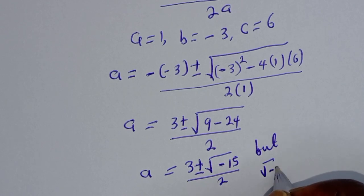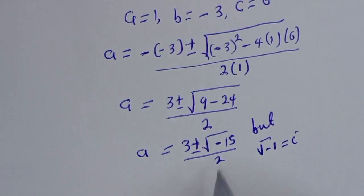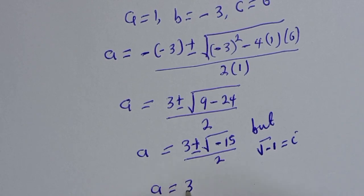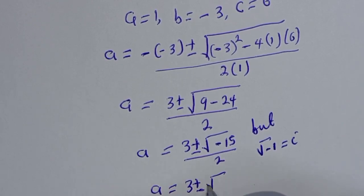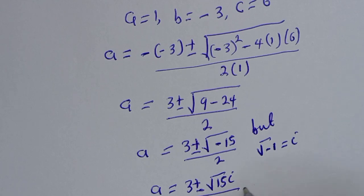Since square root of minus 1 equals i, this becomes a equals 3 plus or minus square root of 15 times i, over 2. This is a complex solution.